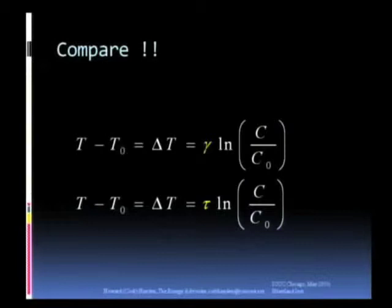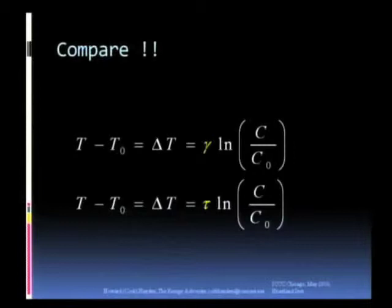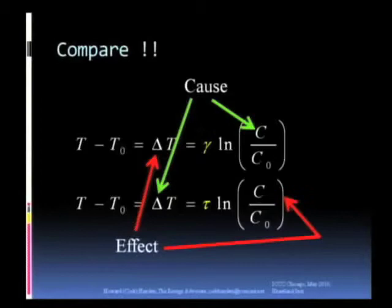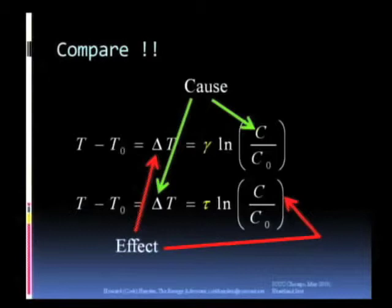Now we're going to put those together. We have two totally different phenomena. One phenomenon tells us that if the CO2 in the atmosphere rises, then the temperature will go up, and it follows the equation on the top. The other equation tells us that if the temperature rises, the CO2 in the atmosphere goes up according to the equation below. The only difference is we have an unknown coefficient gamma and we have an unknown coefficient tau. Let us proceed. In the upper equation, the cause is the carbon dioxide increase. The effect is the change in the temperature. In the lower equation, the cause is the change in temperature, and the effect is the change in carbon dioxide.